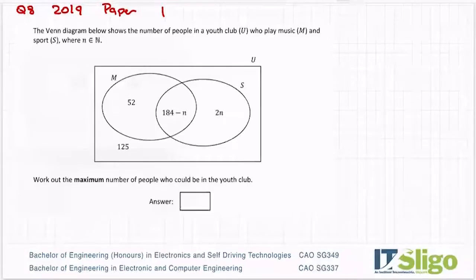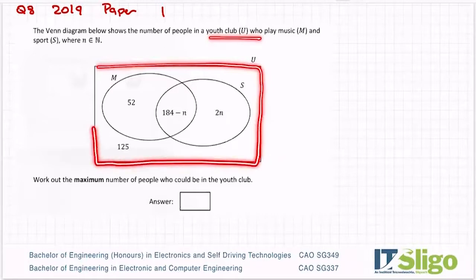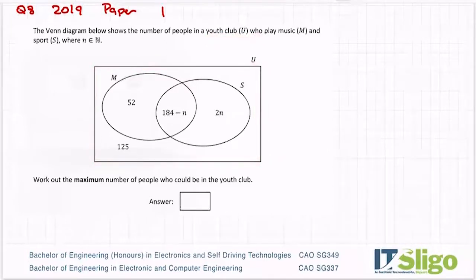Question A from 2019 looked at min-max of sets, something you should know on the higher level course. The Venn diagram below shows the number of people in a youth club who play music and sport. Work out the maximum number of people who could be in the youth club.